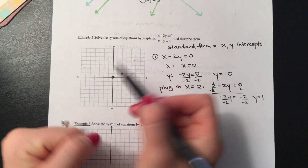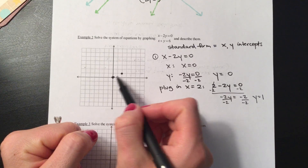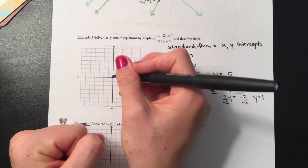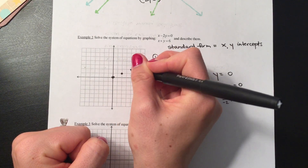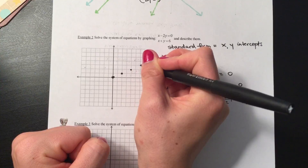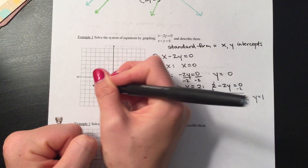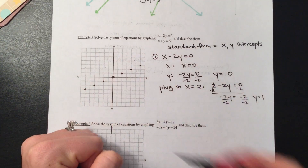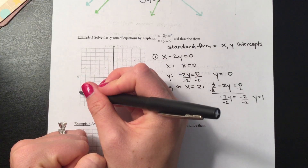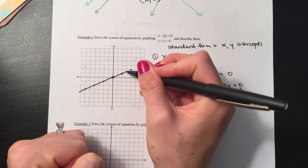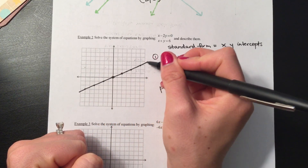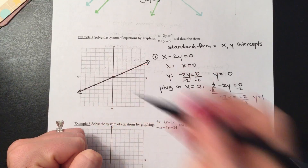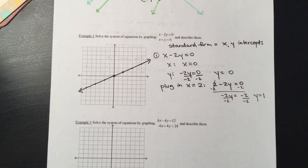Look at the slope between these two points — you can just continue that pattern of up 1, over 1. You can plot as many points as you can within the grid. Since we're solving by graphing, you want to make sure the graph is as accurate as you can possibly make it, because you want to know exactly when they intersect each other.